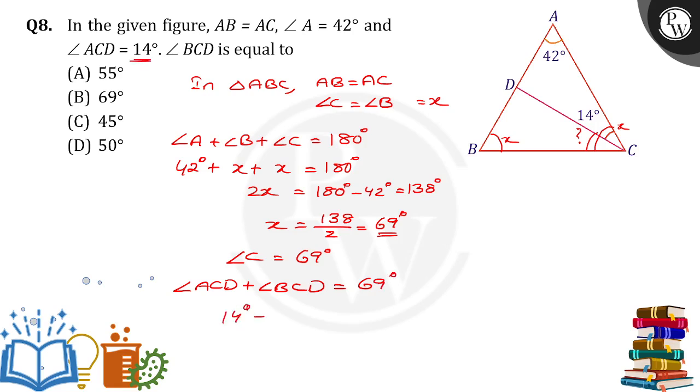So 14 plus angle BCD equals 69 degrees. Therefore angle BCD equals 69 minus 14, which gives us 55 degrees. So option A is the right answer. Thank you.